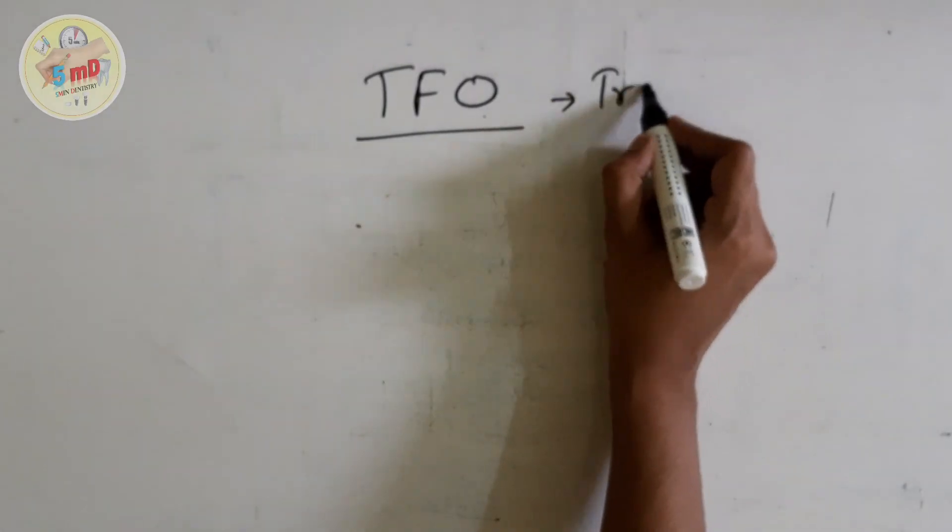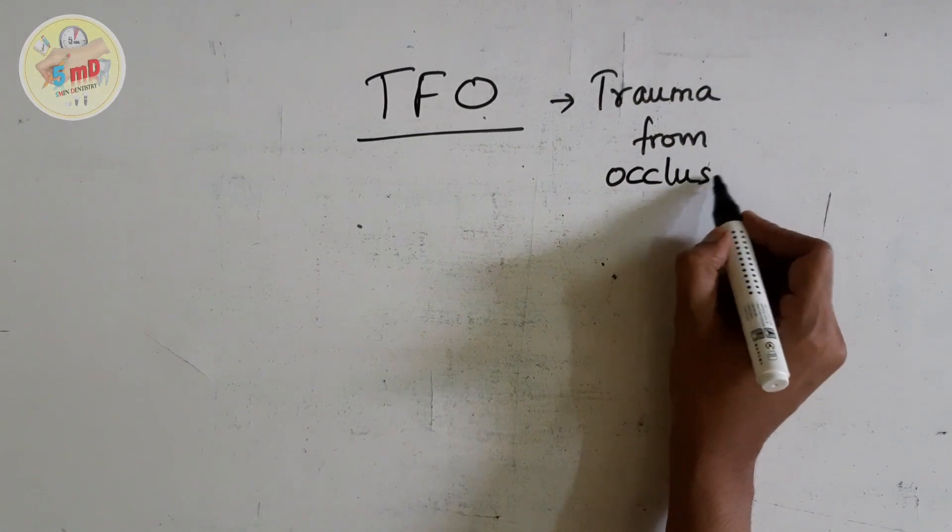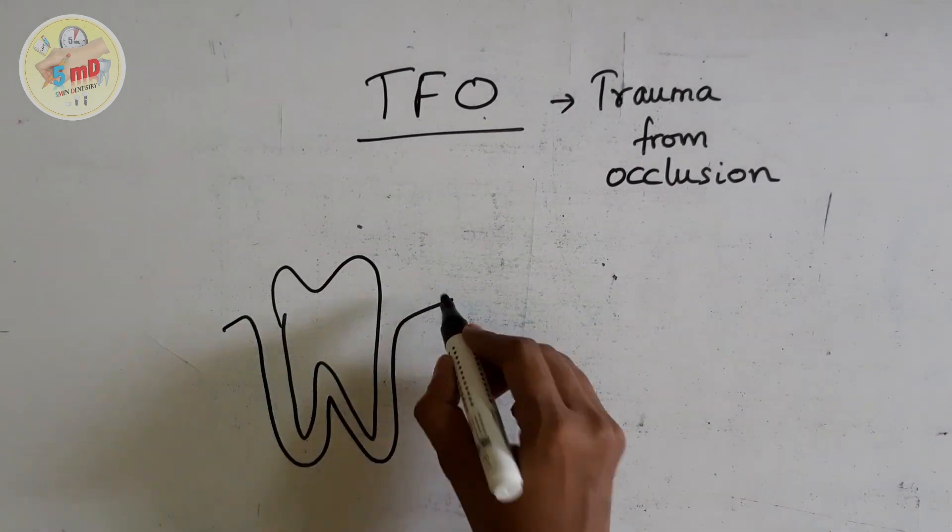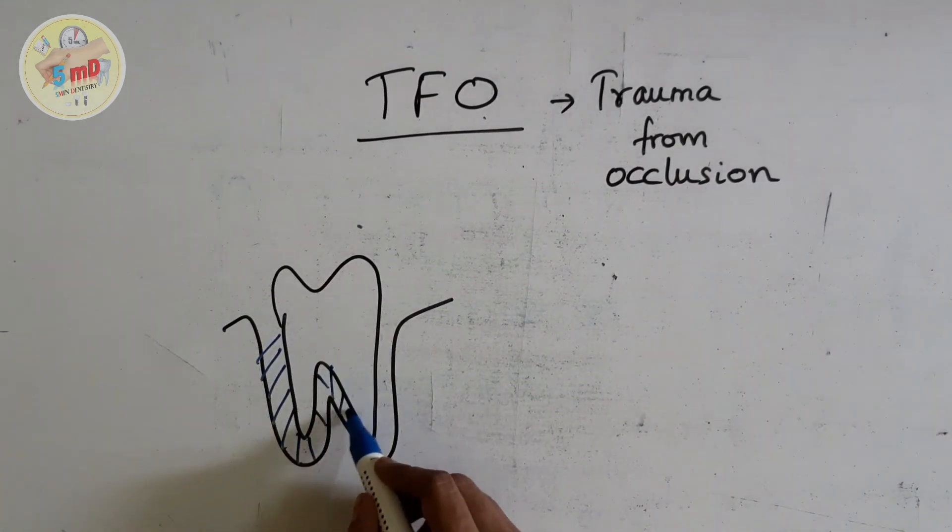Today let us see about trauma from occlusion. In general, when you consider periodontium, it has a cushion-like effect to the occlusal forces exerted on the tooth.